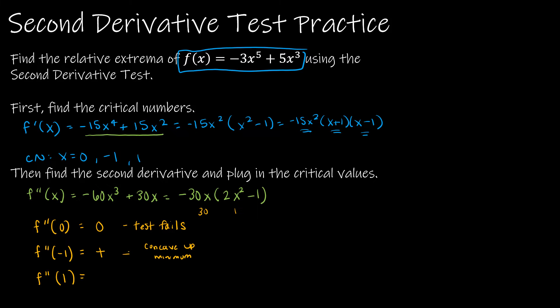For x = 1, f''(1) gives me -30(1)(2(1) - 1) — negative on the outside, positive on the inside — so that gives me a negative. A negative means concave down, and if it's concave down, that means we're going to have a maximum.